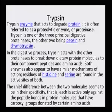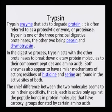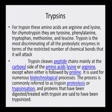Another enzyme is trypsin, which acts to degrade protein and is one of the three principal digestive proteinases along with pepsin and chymotrypsin. We are interested in how trypsin cleaves a peptide chain mainly at the carboxyl side of the amino acid and therefore whether it can help in the dyeing process and act as a biomordant.